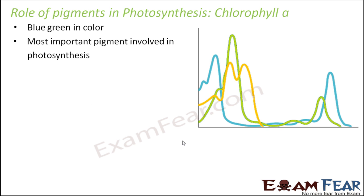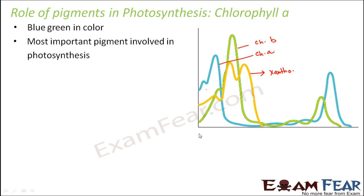Looking at the graph of absorption of the different pigments: the blue colored line represents chlorophyll A, the orange colored line represents carotenoids or xanthophylls, and another line represents chlorophyll B. This graph shows the rate of absorption — how much absorption each pigment does plotted against the wavelength of light. For chlorophyll A, maximum absorption happens in the red and the blue region, with peaks in those regions, meaning maximum photosynthesis takes place in these two regions.